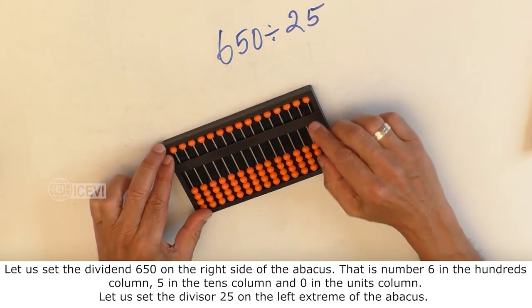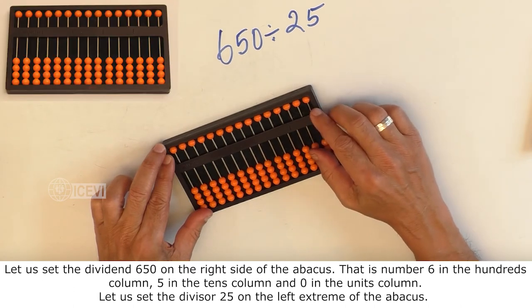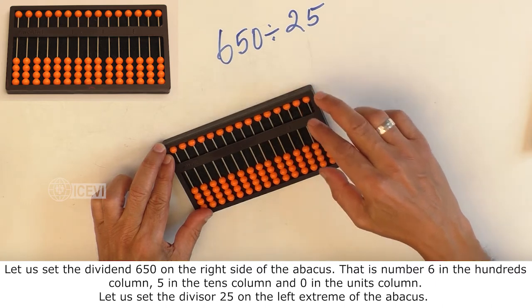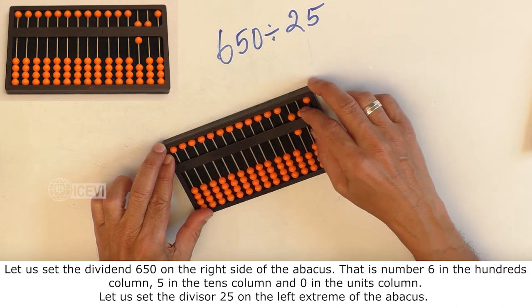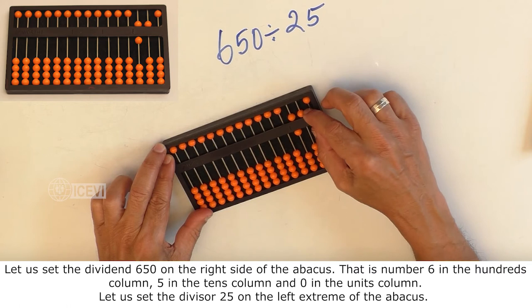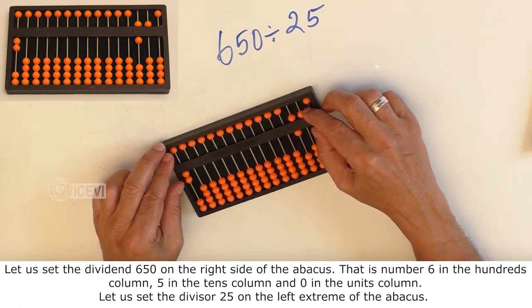Let us set the dividend 650 on the right side of the abacus. That is, number 6 in the 100's column, 5 in the 10's column, and 0 in the 1's column. Let us set the divisor 25 on the left extreme of the abacus.